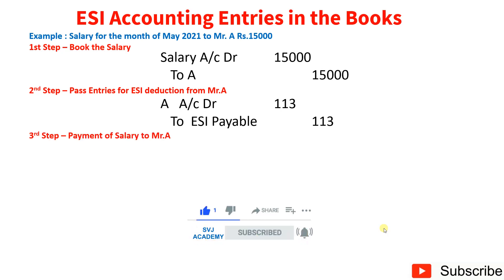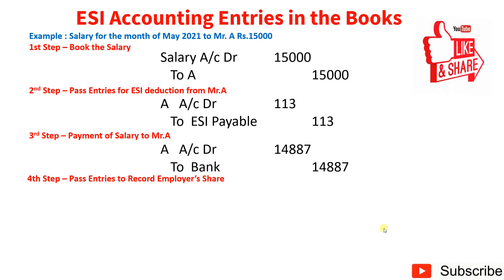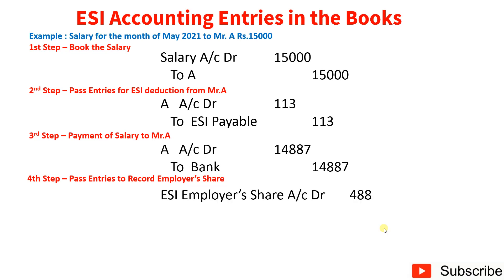Step 3 — payment of salary to Mr. A: debit Mr. A Rs. 14,887 (15,000 minus 113), credit Bank account Rs. 14,887. Step 4 — record employer's share of ESI: create a new expense account 'ESI Employer Share'. Debit ESI Employer Share Rs. 488, credit ESI Payable Rs. 488.